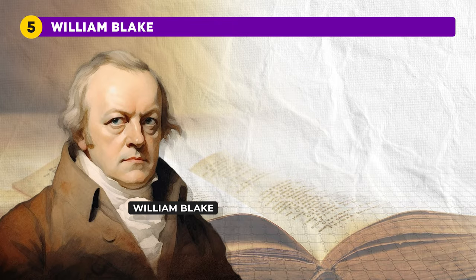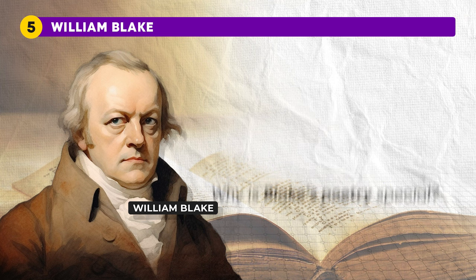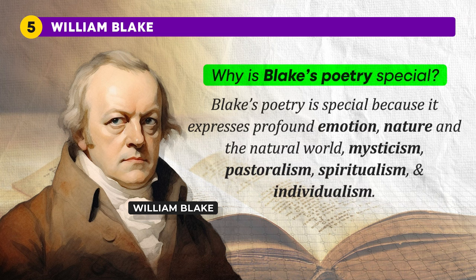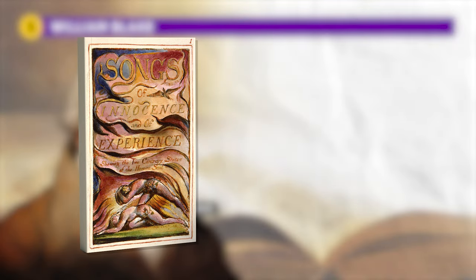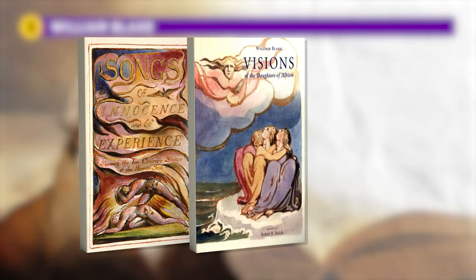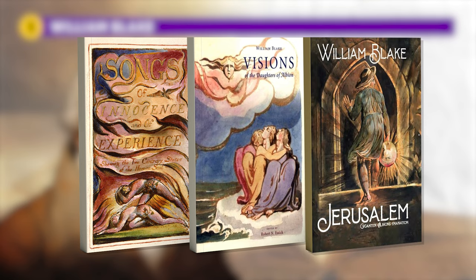Moving on, we have William Blake. He was born into a working class family in London and was a deeply religious poet. He was not fully appreciated during his lifetime but is now recognized as one of the greatest English poets. Besides poetry, he was also an artist, engraver and printmaker. Blake's poetry is special because it expresses profound emotion, nature and the natural world, mysticism, pastoralism, spiritualism and individualism. Some of his notable works include Songs of Innocence, Songs of Experience, and complex writings like Visions of the Daughters of Albion and Jerusalem. Blake was also known for his artwork during the Romantic era.